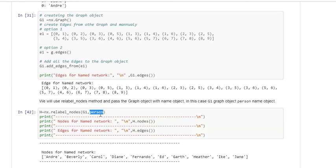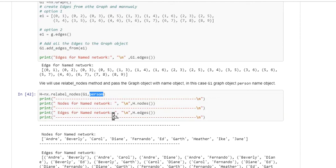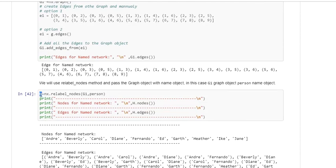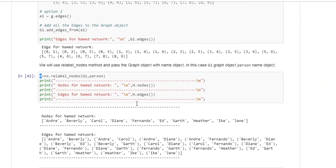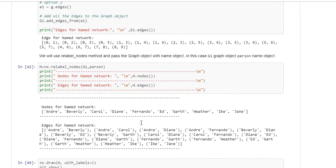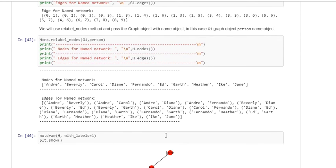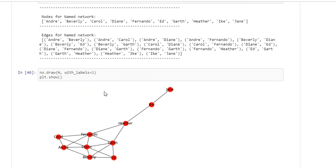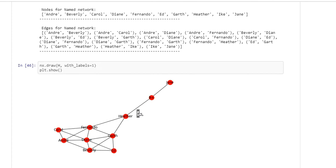If I use that relabel command and store it into a different object, you see all the names are there as part of this. G1 is now in my new graph object which gets created using this option, and then these are the different edges that generate. I can use draw with label and this is the output that we get.